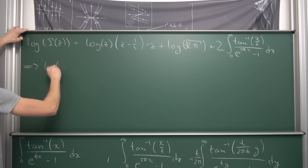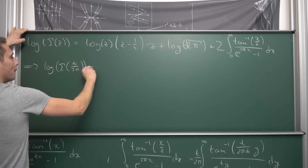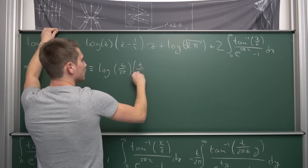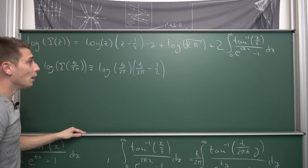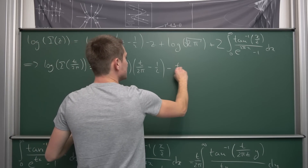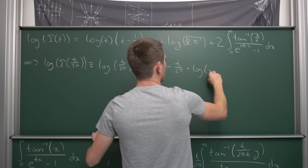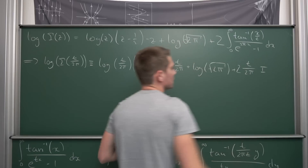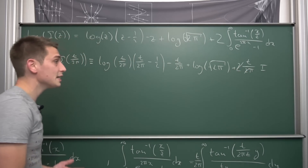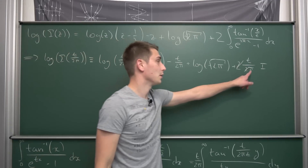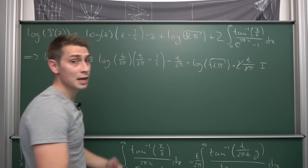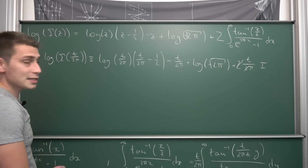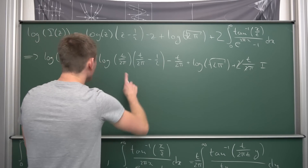Plugging z equal to t over 2π into Binet's formula gives us: log of gamma of (t over 2π) equals log of (t over 2π) times (t over 2π minus one half), minus t over 2π, plus log of the square root of 2π, plus 2 times (t over 2π) times our integral I. Notice that the 2 and 2 cancel nicely. We can then multiply both sides by the multiplicative inverse of t over π, which is π over t — this is another reason t must be strictly greater than zero, so we can divide by it to solve for I.